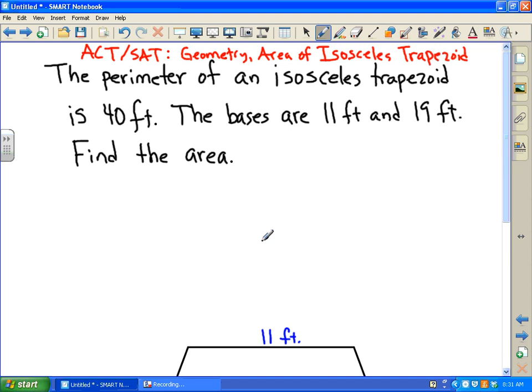The given information says that the perimeter of an isosceles trapezoid is 40, that's given, 40 feet. And the bases of this trapezoid are 11 feet and 19 feet. Find the area.